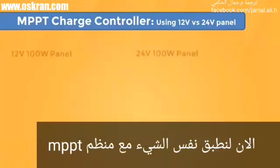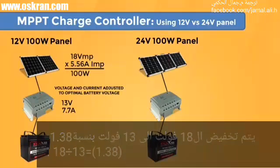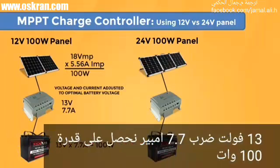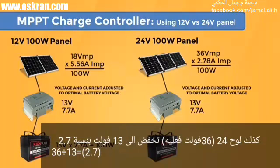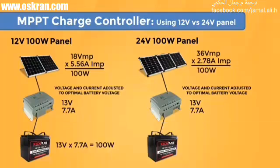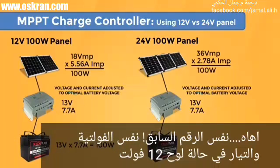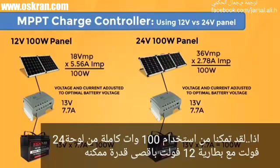Now let's do that with an MPPT charge controller. The 18 volts is dropped down to 13 volts at a ratio of 1.38 (18 volts divided by 13 equals 1.38). Increasing the current by 1.38 raises it to 7.7 amps: 13 volts times 7.7 amps equals 100 watts. The 24-volt panel's 36 volts is dropped down to 13 volts with a ratio of 2.7 (36 volts divided by 13 equals 2.7). So the current is raised by 2.7 to 7.7 amps — the same voltage and current output as the 12-volt panel. We're able to use all 100 watts of power from the 24-volt panel in the 12-volt battery bank, getting all the available power.